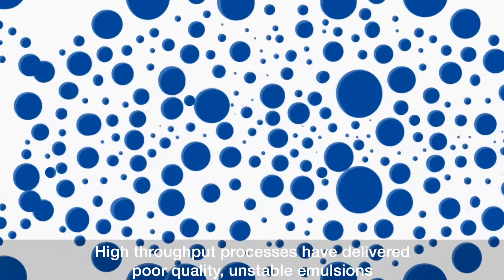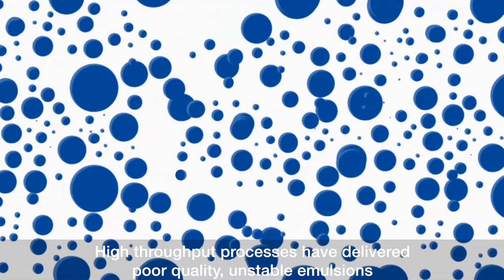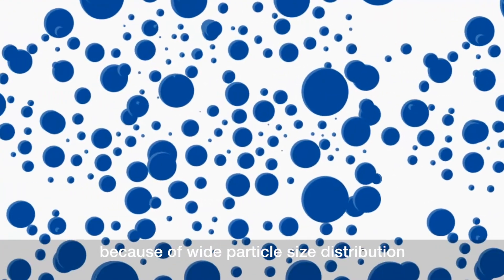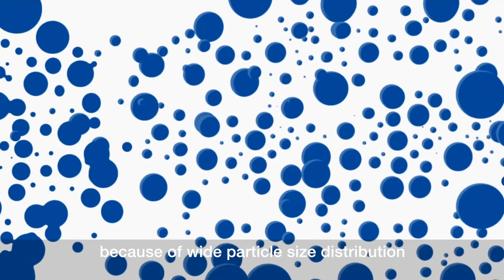Cruder high throughput manufacturing processes typically deliver poor quality unstable emulsions because of the wide particle size distribution they produce.